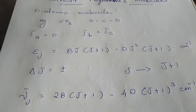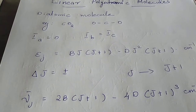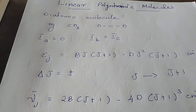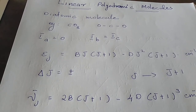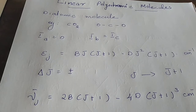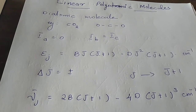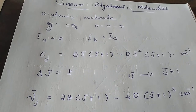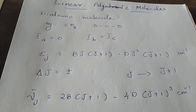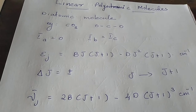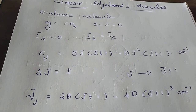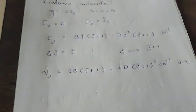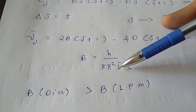As discussed in the previous video, diatomic molecules and linear polyatomic molecules are similar. In the case of polyatomic linear molecules, the moment of inertia for end-over-end rotation is greater. The rotational constant B is equal to h/8π²IC.